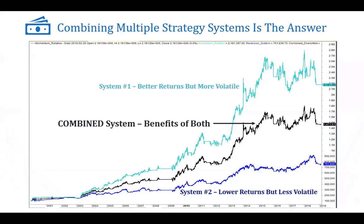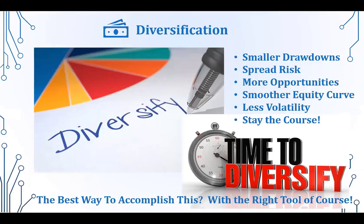Here are two different systems and their individual equity curves as well as their combined equity curve. The combined equity curve gives us the benefits of both systems and the combined results are smoother. Equity curve one is a little more volatile, system two is a little smoother, and you can see the combined equity curve of the two systems gives you better returns and overall less volatility. System diversification smooths out and balances the emotional and financial impact of inevitable drawdowns. It also spreads risk through different system opportunities while offering more potential pieces of the market pie. A smoother overall equity curve means less volatility of returns, which makes staying the course so much easier.